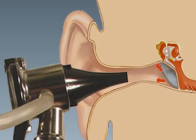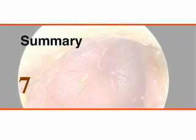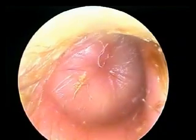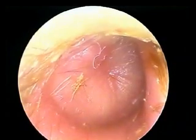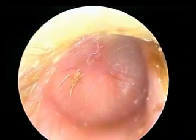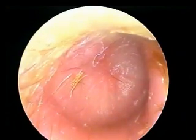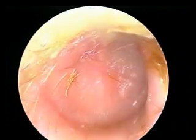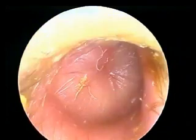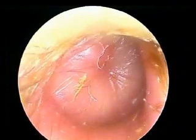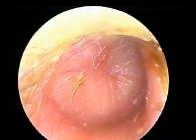A common mistake is to use a speculum that is too small relative to the size of the ear canal, which causes a leak in the system. Proper performance of pneumatic otoscopy is critical for the accurate diagnosis of acute otitis media and otitis media with effusion. Clinicians should master this technique in order to provide optimal care for children with this common condition.